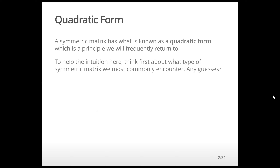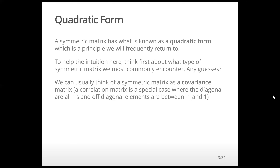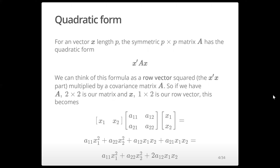A symmetric matrix has what's known as a quadratic form, and this is a principle we'll return to quite a bit. We can help our intuition by thinking of a symmetric matrix as a covariance matrix, remembering that a correlation matrix is a special case where the diagonal equals 1 and the off-diagonal elements are between -1 and 1. For any vector x of length p and symmetric p×p matrix A, the quadratic form is x transpose times A times x.